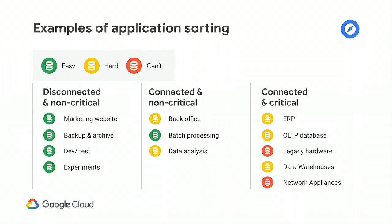Here's an example of one way to catalog applications. You have applications that are disconnected — no dependencies, not mission critical — and those are relatively easy. Then you have ones with some dependencies but still not mission critical, like back office, which gets trickier. And then you have production workloads — your ERP, databases, and production apps — which have cross-dependencies, are mission critical, and can be hard or sometimes impossible to move.